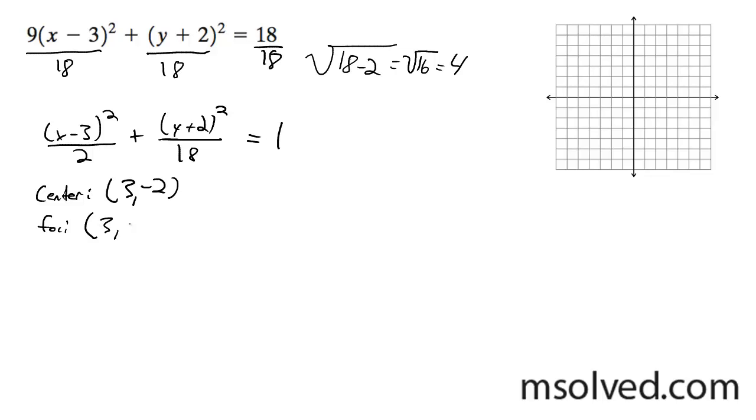So it's going to be 3, negative 2 minus 4, which is negative 6. And then 3, and then plus 4, which gives me 2.